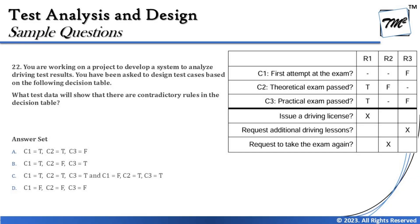Let's move on. Question number 22 says: you are working on a project to develop a system to analyze driving test results, and you have been asked to design test cases based on the following decision table. There are three conditions: is this the first attempt at the exam, theoretical exam passed, and practical exam passed. There are three outputs: issue a driving license, request additional driving lessons, or request to take the exam again. The three rules R1, R2, and R3 have some missing notations.